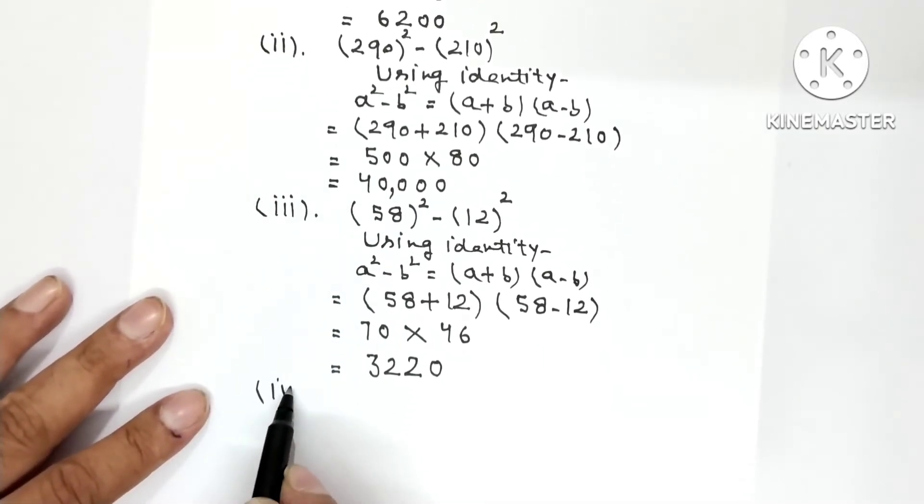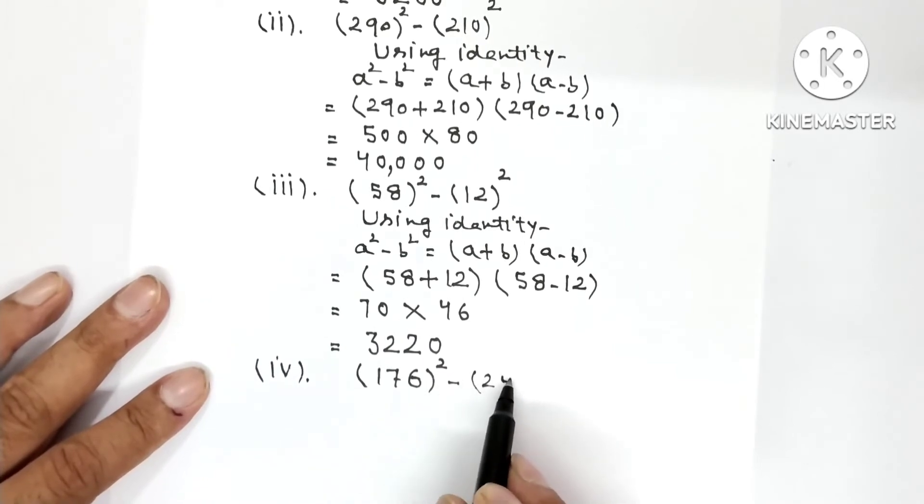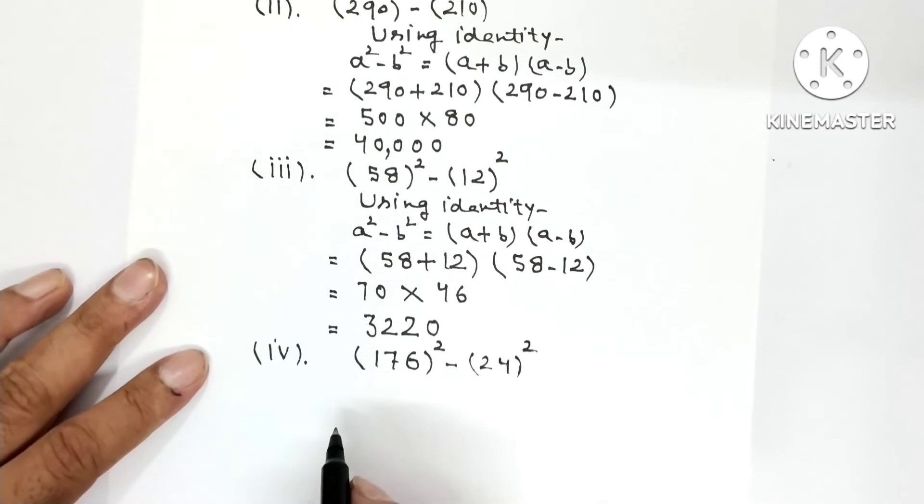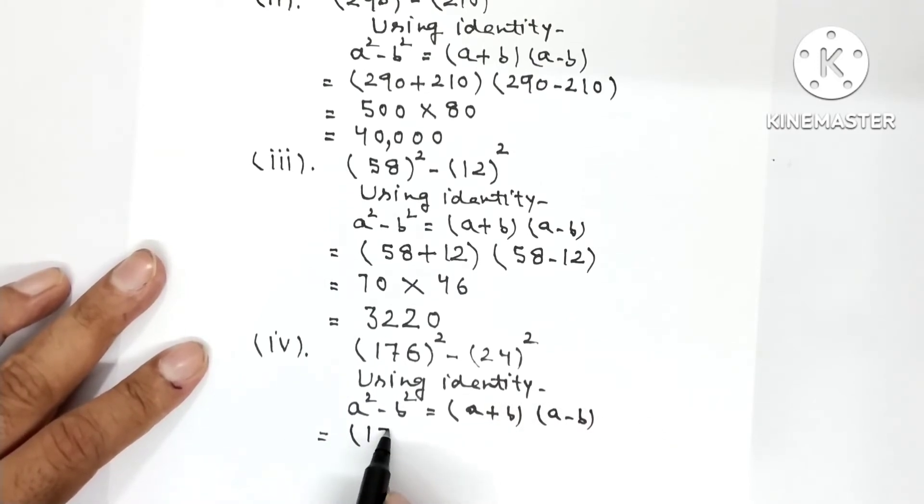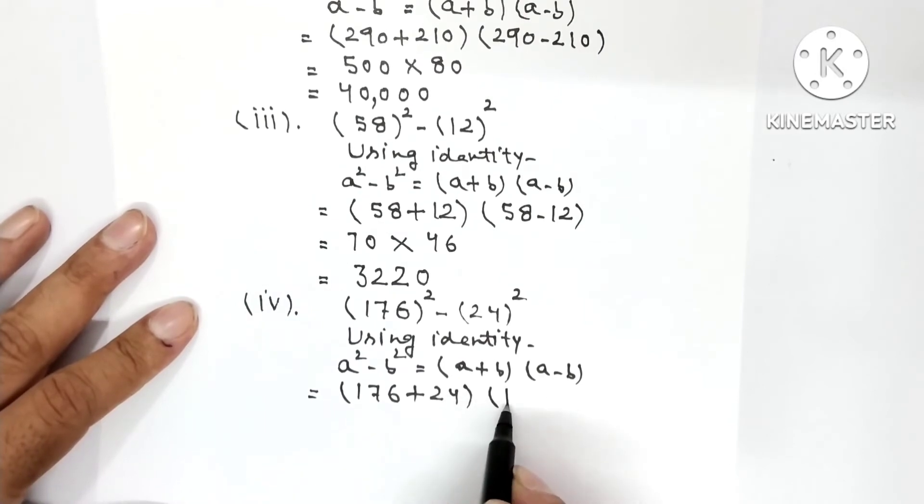Part number 4. 176 whole square minus 24 whole square. We'll apply the identity, using identity: a square minus b square is equal to a plus b into a minus b. So a is 176 plus b is 24, into 176 minus 24.